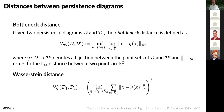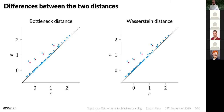In contrast to the bottleneck distance which uses a supremum, the Wasserstein distance sums over all the distances of the projected points with a suitable weighting parameter. These two distance measures make the persistence diagram space a metric space. The bottleneck distance uses only a single distance to evaluate the similarity between persistence diagrams, whereas the Wasserstein distance is more robust because it integrates information from both diagrams.